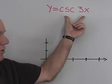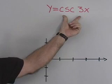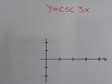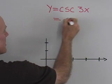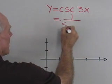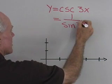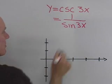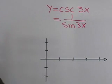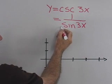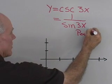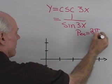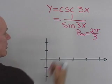Let's look at another problem. I want to graph y = csc(3x). I know that cosecant is the reciprocal of sine, so I'm going to write this as 1 over sin(3x) and graph that function first, then take its reciprocal. The graph of y = sin(3x) will have an amplitude of 1 and a period of 2pi divided by 3 — that coefficient right there.